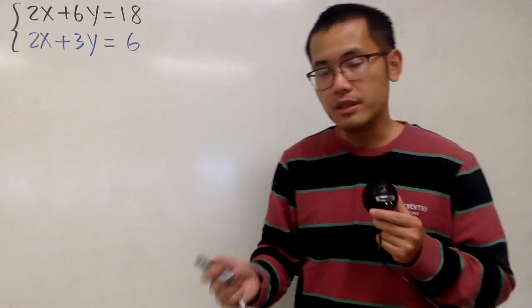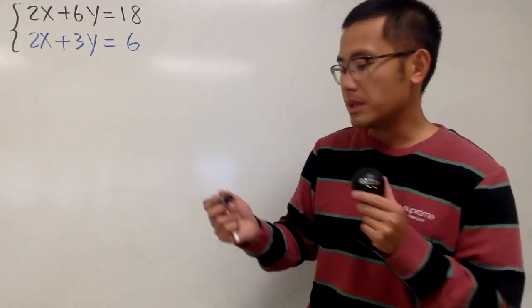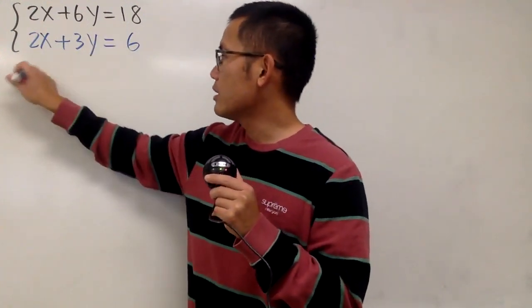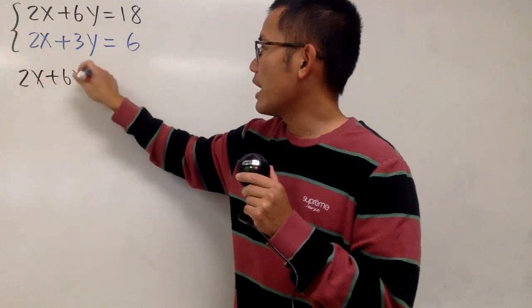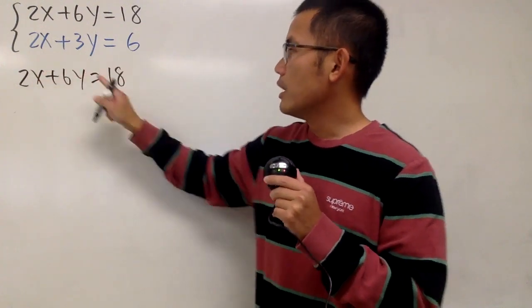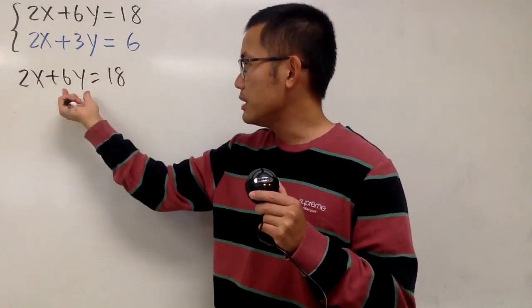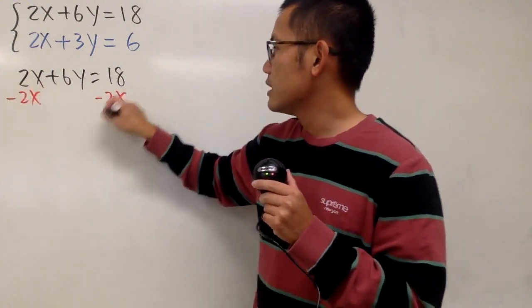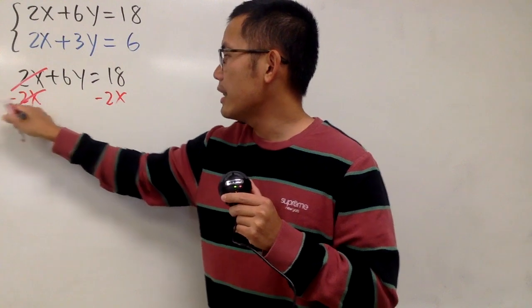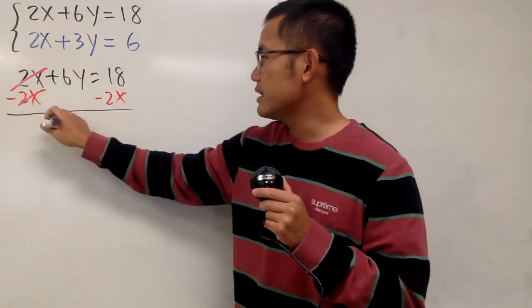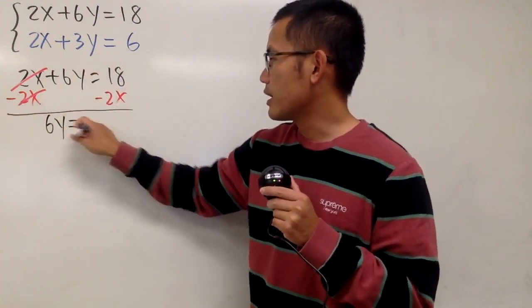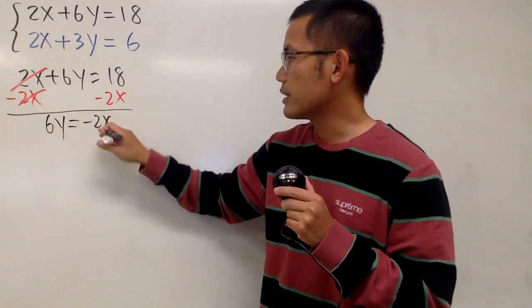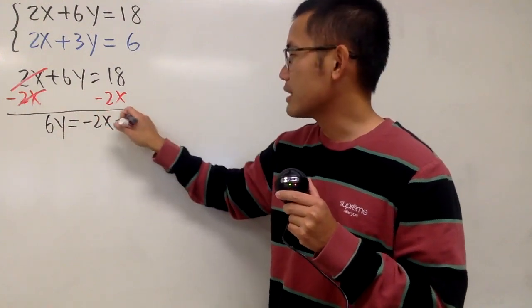For the first one, we have to first put it in the y equals mx plus b form. So let me just work that out right here. 2x plus 6y equals 18. I need to isolate the y, so I'll keep this first. That means I will have to minus 2x on both sides so that this and that will cancel. And then we see that this is 6y, and let's write it down equals, and this is minus 2x. Write that down first, and then we have plus 18.